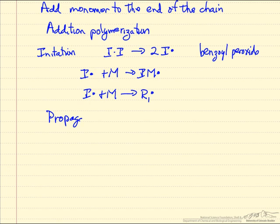This is followed by propagation, and the idea here is we have R1 reacts with the monomer and makes R2, which is still reactive. We have R2 reacts with a monomer to make R3, and in general we have R with I number of monomer units in it reacting with the monomer to grow the chain. We have I plus 1. This is still a radical. So we're continuing to add monomer to the end of this growing chain.